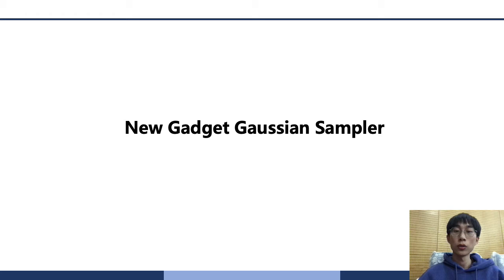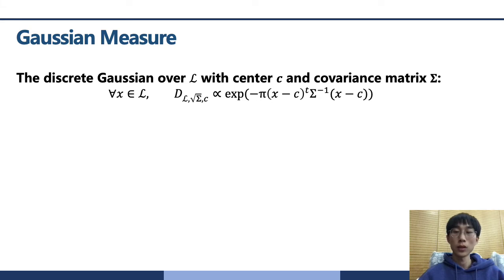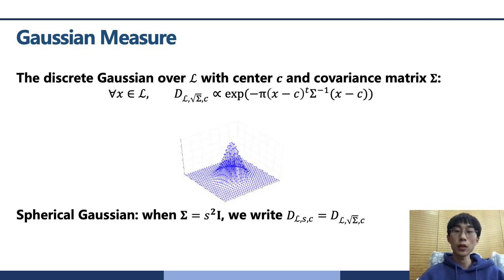First, we will show our new gadget Gaussian sampler. The discrete Gaussian is an important probability distribution in lattice. It usually has three parameters: the lattice L, the center c, and the positive-defined covariance matrix sigma. For discrete Gaussian, the probability of each lattice point is the proportion to the value of the Gaussian function. In particular, when the sigma is the scalar matrix, we call the discrete Gaussian spherical. The parameter s is the width of the Gaussian. Moreover, the smaller s means the higher quality of the Gaussian sampler.